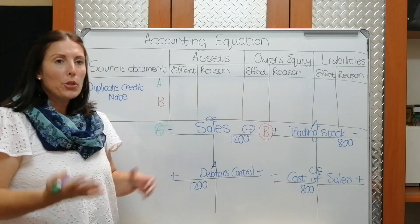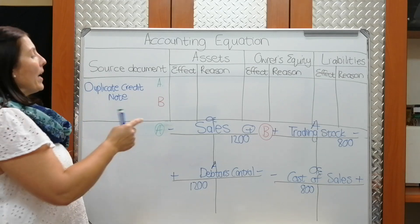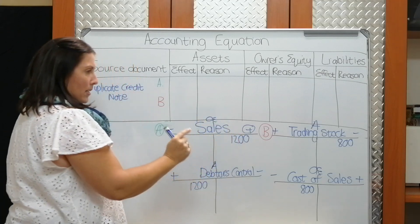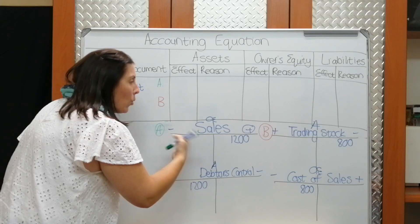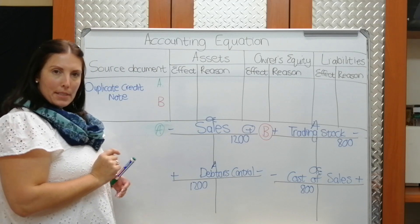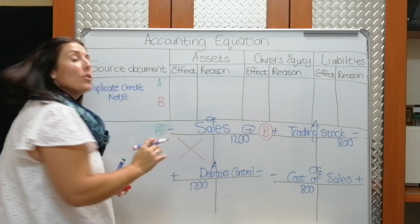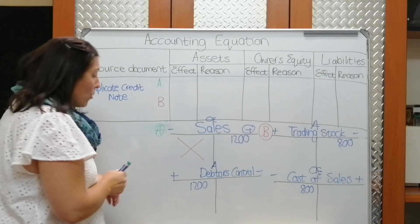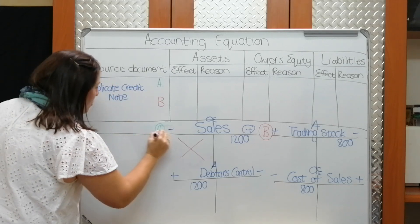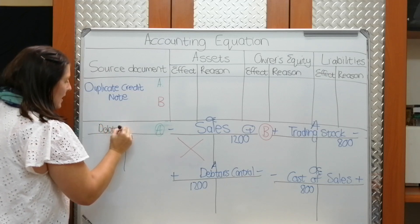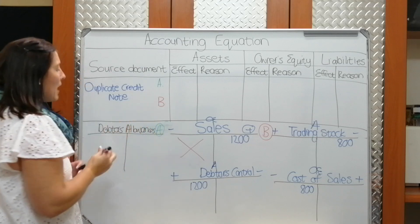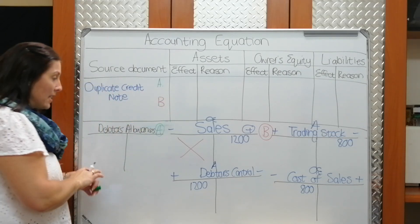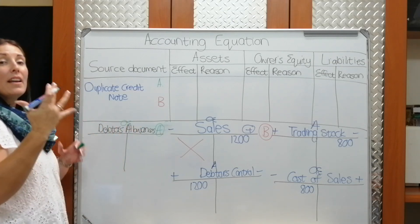He didn't bring everything back — only the damaged part. To reverse or undo the A-part, we would need to debit sales, but we are never allowed to write on the debit side of sales during the year. So instead of writing on the debit side of sales, we create a new account called debtors allowances. We debit debtors allowances instead. Debtors allowances is an owner's equity account — it's an expense, effectively the debit side of sales.